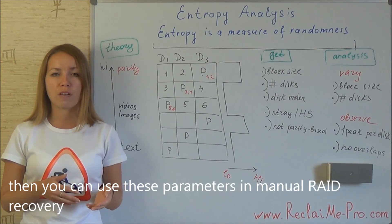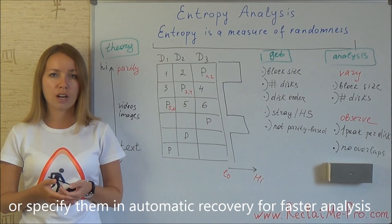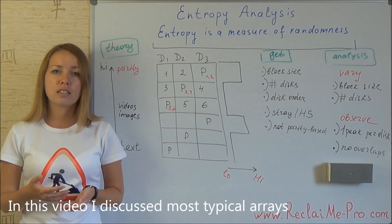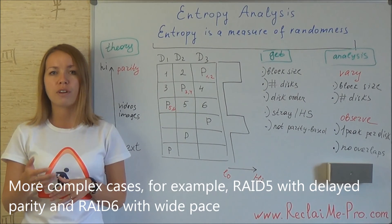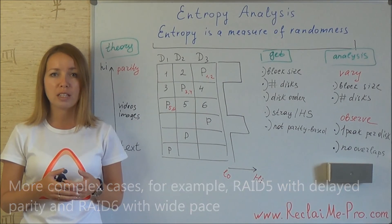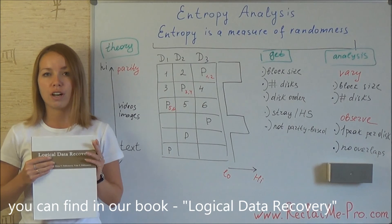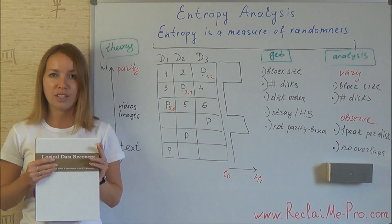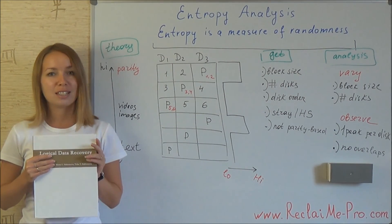Content analysis and entropy analysis together allow you to identify RAID configuration parameters pretty quickly. You can then use these parameters in manual RAID recovery or specify them in automatic recovery for faster analysis. This video covered the most typical arrays. More complex cases — for example RAID 5 with delayed parity and RAID 6 with write-back cache — can be found in our book Logical Data Recovery. If you like our data recovery videos, subscribe to the ReclaiMe channel.